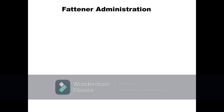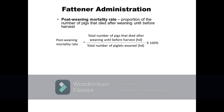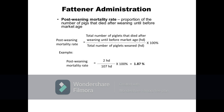Now let's describe the computation of performance indices related to fattening hogs. First parameter is the percent post-weaning mortality. This refers to the proportion of pigs that died prior to marketing or harvest out of the total number of pigs weaned. It is calculated as total number of pigs that died after weaning until before harvest divided by the total number of pigs weaned, multiplied by 100%. For example, if there were 107 weaned pigs and 2 of them died before harvest, percent post-weaning mortality is calculated as 2 divided by 107 times 100%, equals 1.87%.